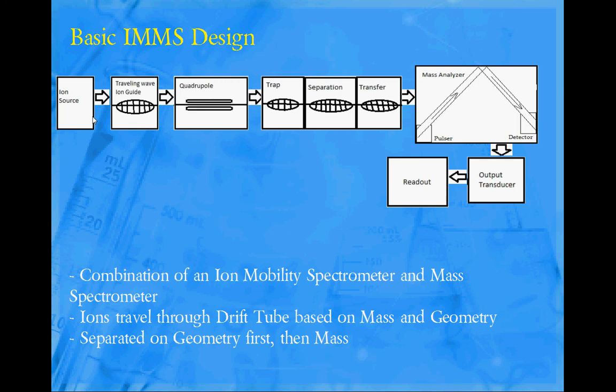The trap repels unnecessary and unwanted molecular weights and sizes. Separation is where the actual collisions take place, and the transfer is where the inert gases are gotten rid of because they could interfere in the mass analyzer part.